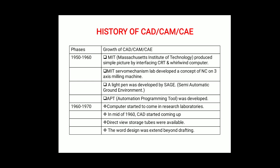The history of CAD/CAM/CAE: In 1950–60, MIT produced simple pictures by interfacing CRT with a Whirlwind computer, developed the concept of NC machines on three axes, and developed the light pen and APT. In 1960–70, computer research libraries started, and CAD systems began emerging with designers extending beyond drafting.